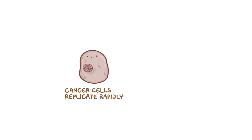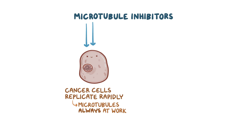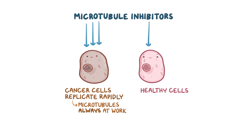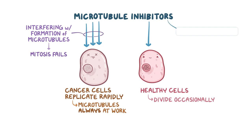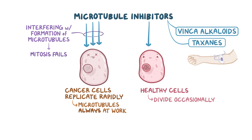Cancer cells replicate rapidly, so they're constantly undergoing mitosis and the microtubules are always at work. This means that microtubule inhibitors will affect these cells more than our healthy cells, most of which only divide occasionally. Interfering with the formation of microtubules will cause mitosis to fail, and the cell will eventually die without replicating. All anti-cancer microtubule inhibitors are given intravenously.